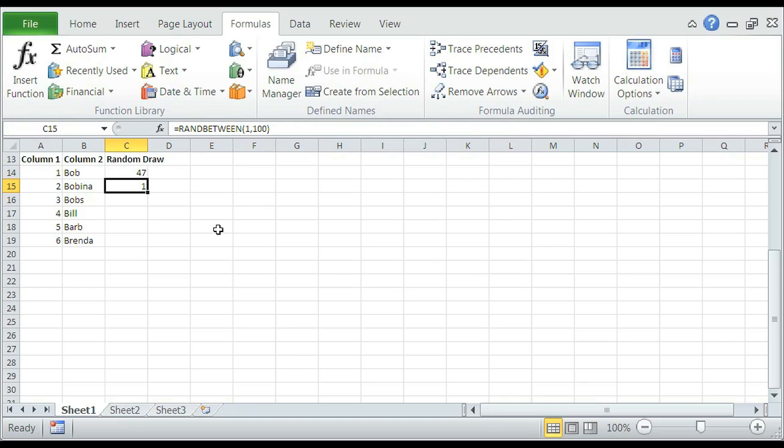You could do that for each of the cells, and it'll do a random drawing of numbers.